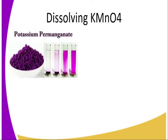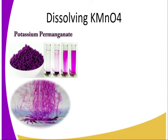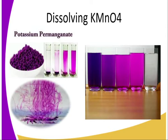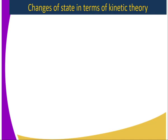We can demonstrate the kinetic theory by dissolving potassium permanganate. When you dissolve potassium permanganate and leave the solution undisturbed, you will observe the motion illustrated in this picture. You can see the purple color of potassium permanganate distributing itself evenly. Eventually the liquid will be uniformly purple in color, because the particles are distributing themselves throughout the liquid.